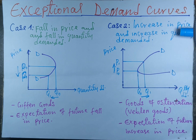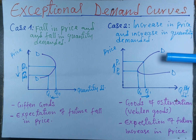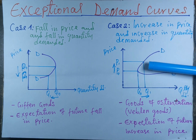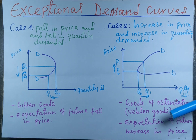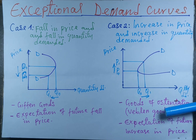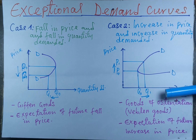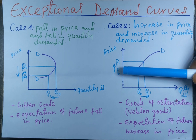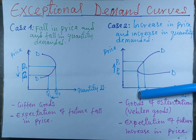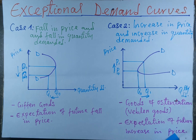Now we look at the second main case, where price increases and quantity demanded also increases. The demand curve here is regressive at the top — as price increases, quantity demanded also increases. This is the case with goods of ostentation, also called Veblen goods. These are a type of prestigious good that people buy to display their wealth. As price increases from P0 to P1, their quantity demanded also increases.